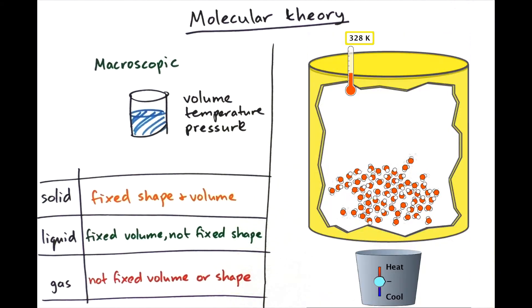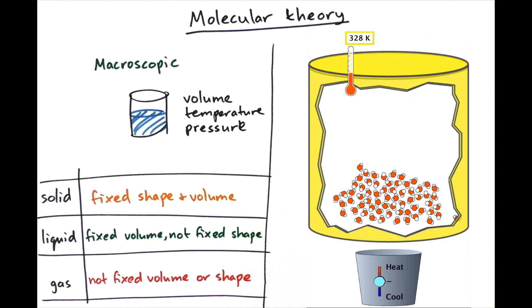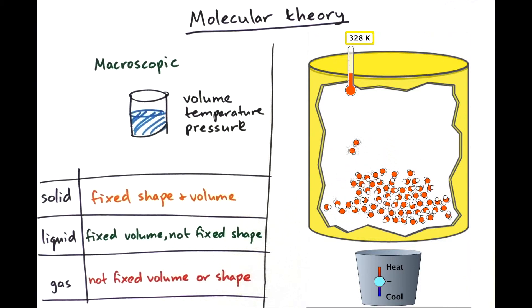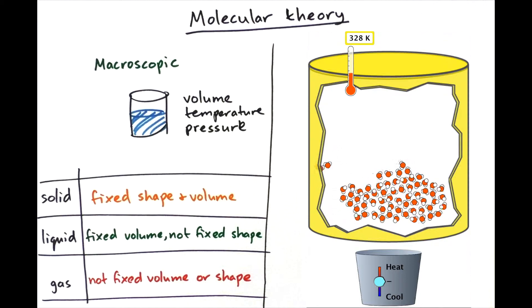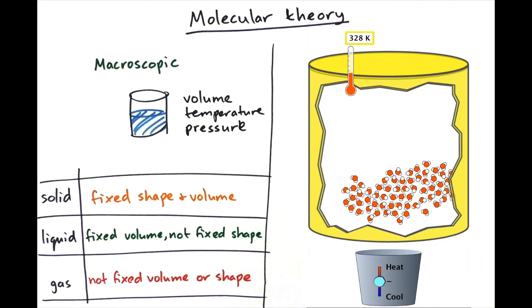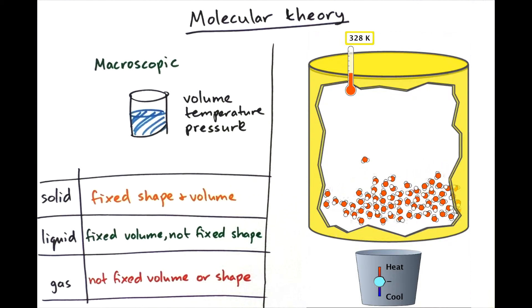So if we look at the properties that we wrote about on the left hand side. We said that for a liquid it's got a fixed volume but not a fixed shape. So fixed volume we can explain by the fact that the distance between the molecules always stays the same. So then the volume can't change. And changing shape we can explain by the fact that they are actually free to move past each other.